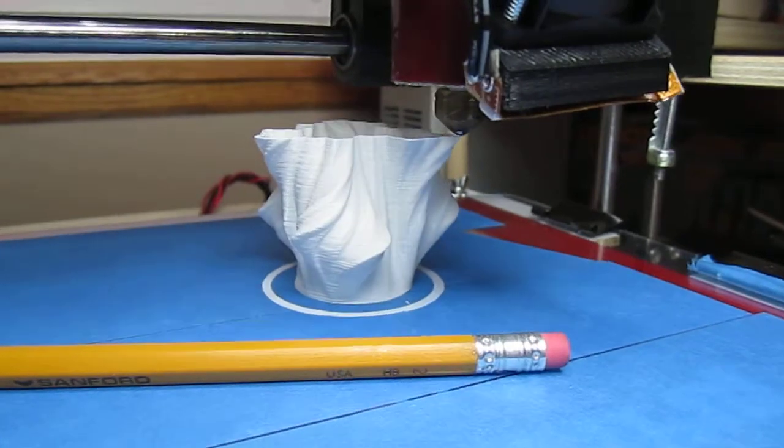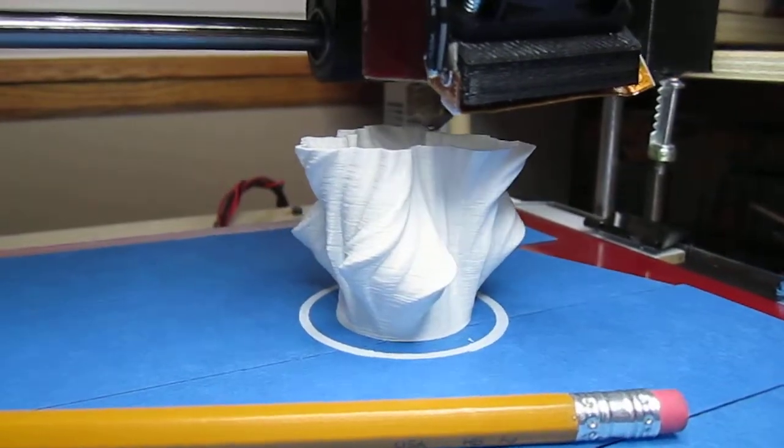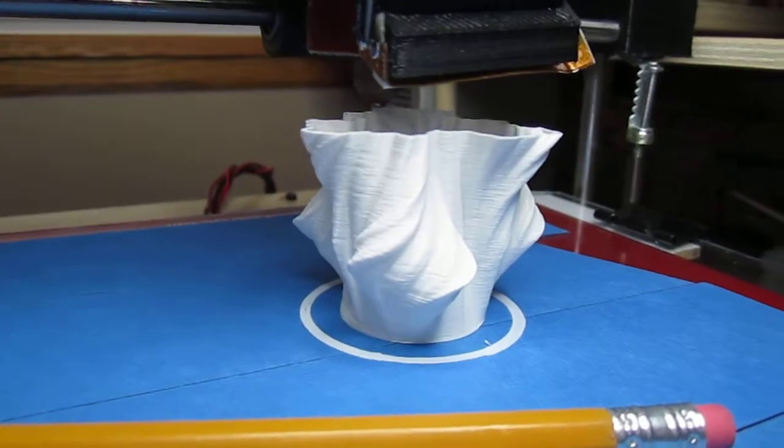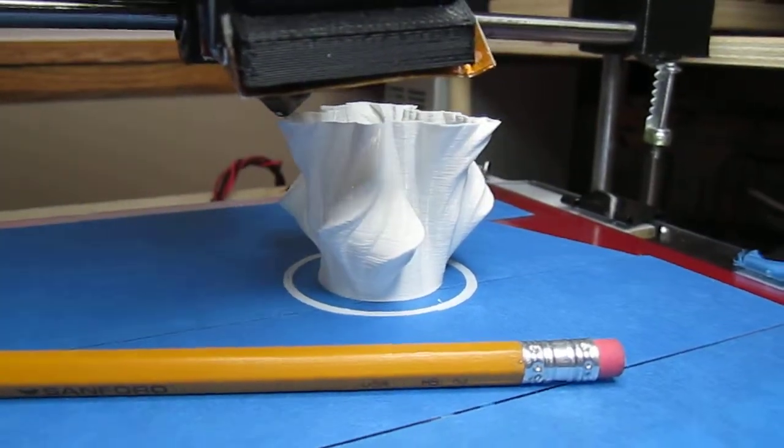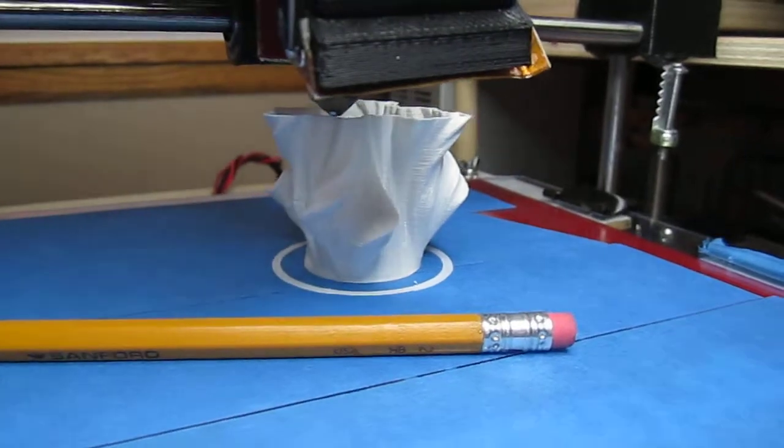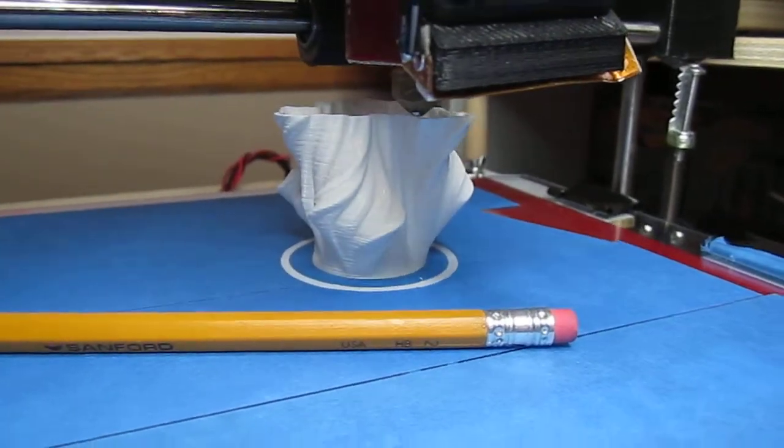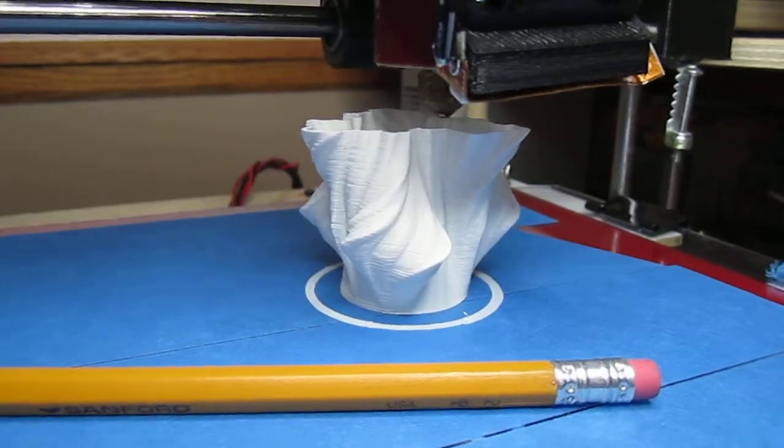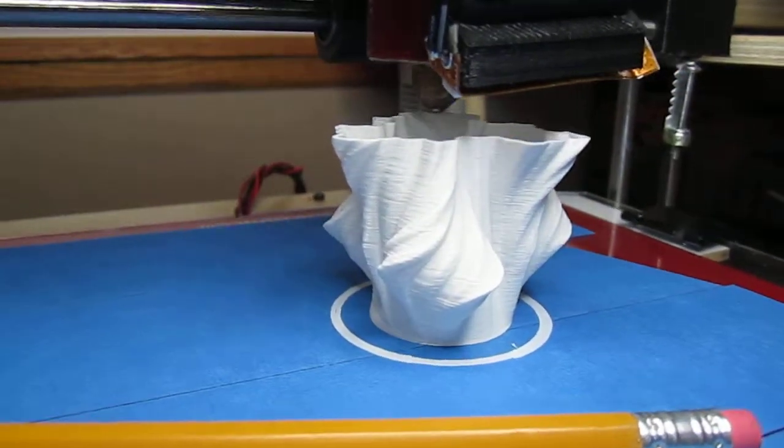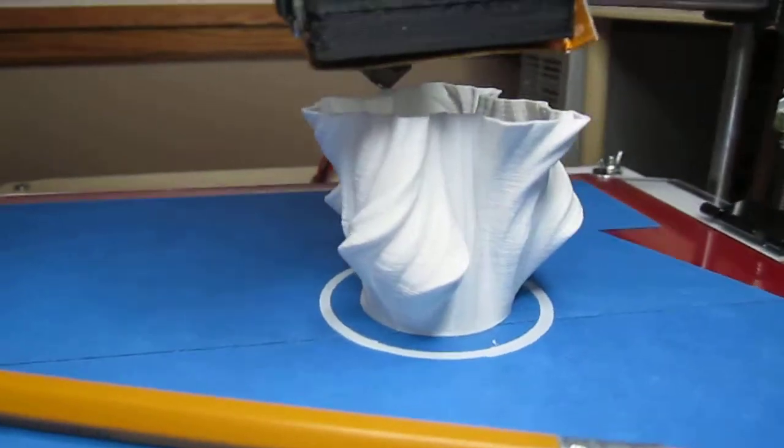But as you can see on this one, it just keeps on going. With this vase mode, it ever so gently moves up gradually as it makes that circle. So as it makes the full circle, it goes up ever so gently. There's no seam in between the layers.